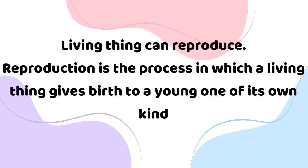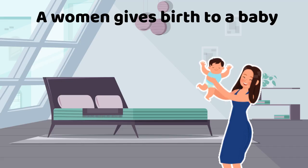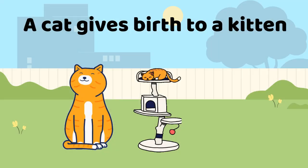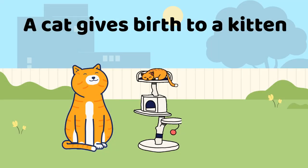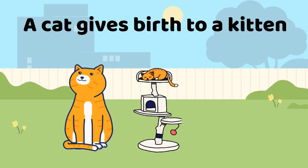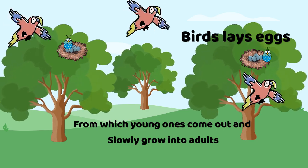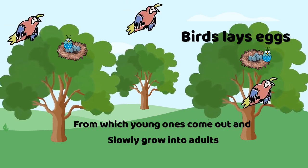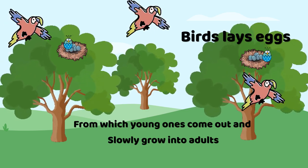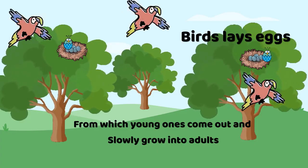Living things reproduce. Reproduction is the process in which living things give birth to a young one of its own kind. A woman gives birth to a baby. A cat gives birth to a kitten. Birds lay eggs, from which young ones come out and slowly grow into adults.